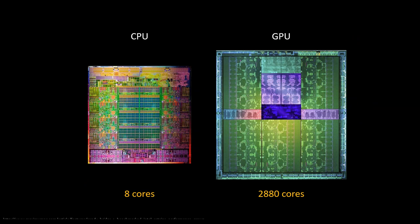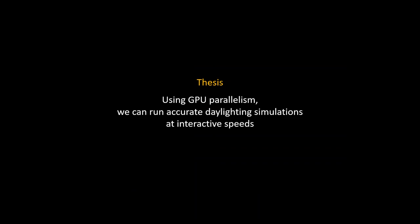I'm going to focus on graphics processing units, or GPUs, because they contain not four or eight or sixteen cores but typically thousands of cores—enough to process calculations for each pixel of an image simultaneously. I want to show in this thesis that using GPU parallelism, we can run accurate daylighting simulations at interactive speeds, and that doing this will allow architects to make better decisions.